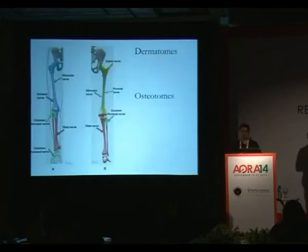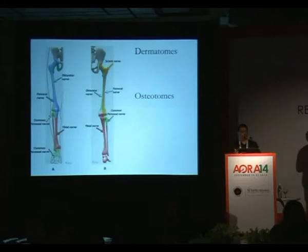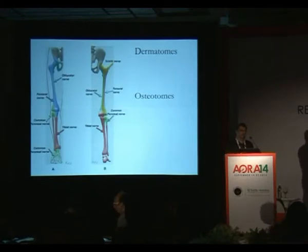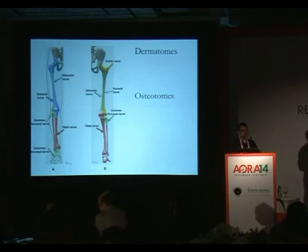You need perfect knowledge not only of the dermatomes but of the osteotomes that the nerve supplies, because the femoral nerve, apart from the sciatic nerve, supplies the shaft of the femur. The entire tibial bone is supplied by the sciatic nerve and in part by the femoral nerve. So when you do a lower limb block, you need to block both the lumbar plexus as well as the sacral plexus to have a unilateral limb block.